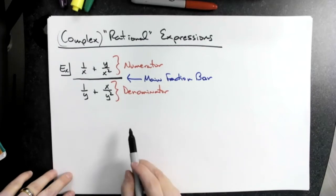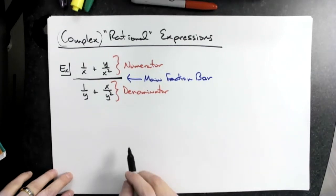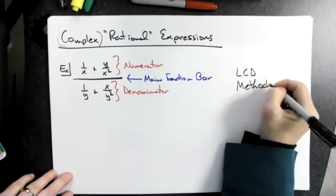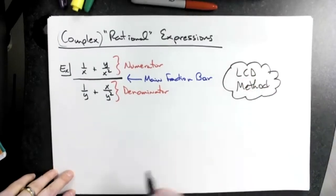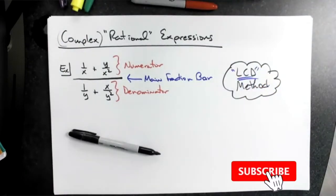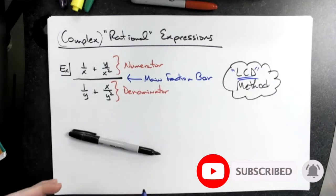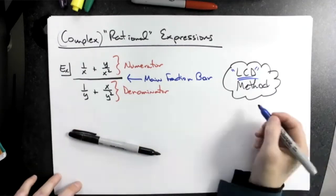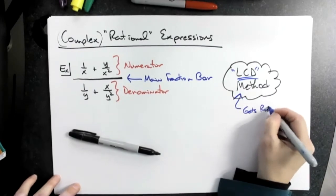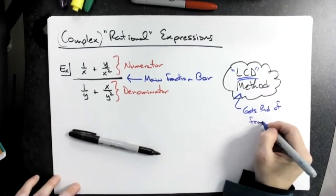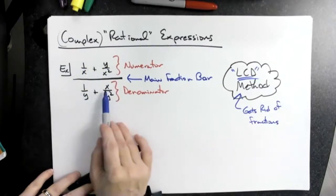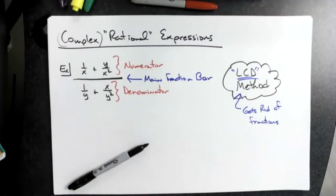The method we're going to use to simplify this is called the least common denominator method. We're going to multiply through by the least common denominator. That's how I get rid of all fractions — and we don't want fractions, we want to keep it as simple as possible. It gets rid of the fractions that are in the numerator and the fractions that are in the denominator.